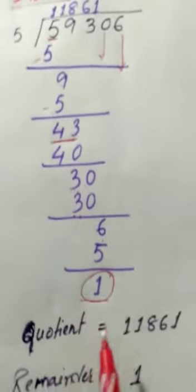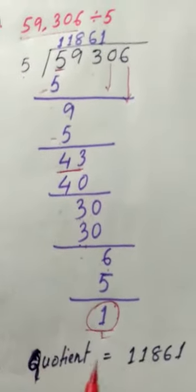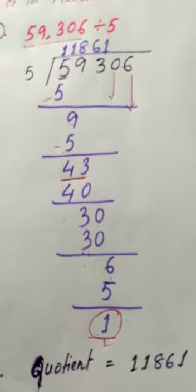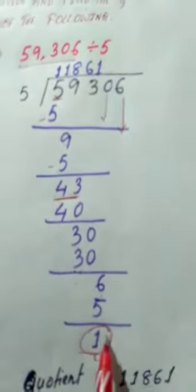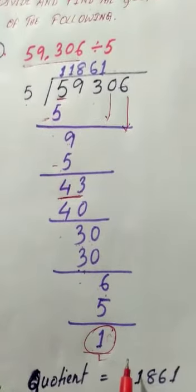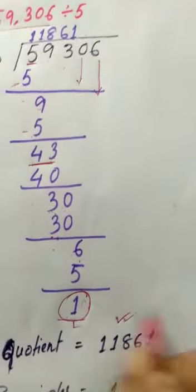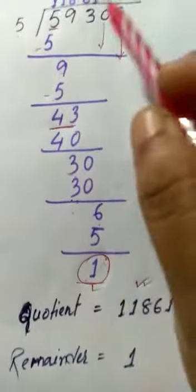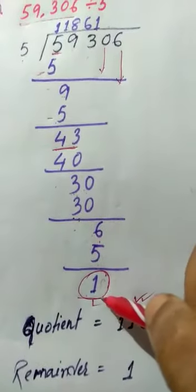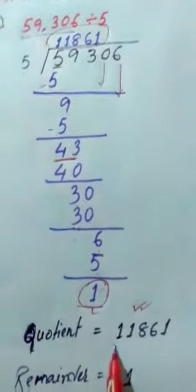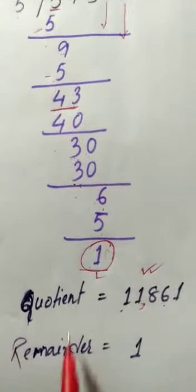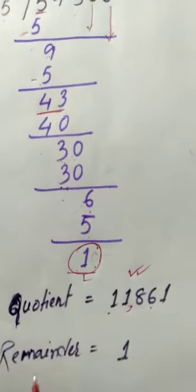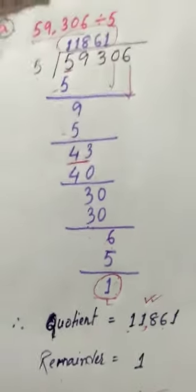Bring down 0 to get 30. 5×6=30, so remainder is 0. Bring down 6 to get 6. 5×1=5, so 6 minus 5 is 1. This 1 is the remainder. The complete quotient is 11,861 and the remainder is 1. So students, this is how we solve part A — is this clear?